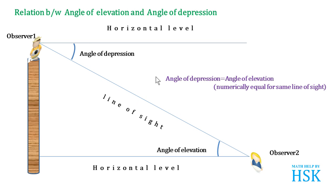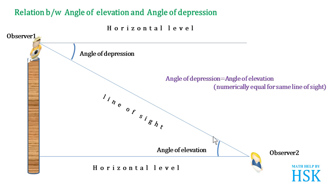So we can give a relation: the angle of depression is equal to the angle of elevation — that is, they are numerically equal for the same line of sight. Since Observer 1 and Observer 2 share the same line of sight, the angle of depression is equal to the angle of elevation.